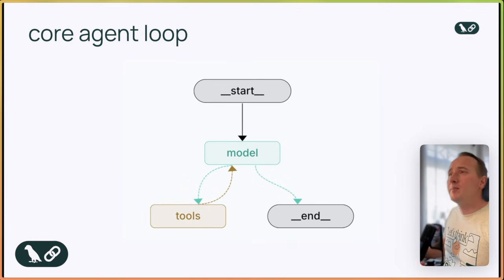First, the model reasons about what to do. Second, it decides whether to call a tool, like fetching data or composing an email. And three, the tool gets executed and returns a result. Lastly, the model observes that result, reasons again, and either takes another action or finishes with a final output.